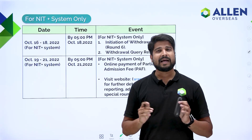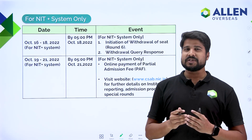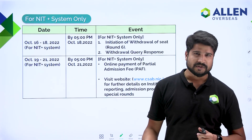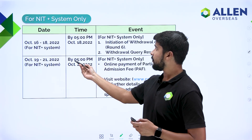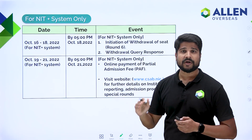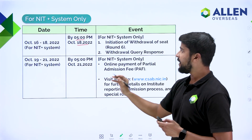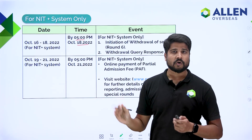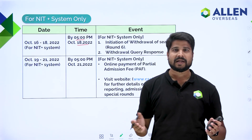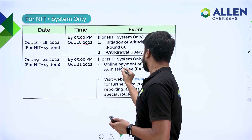After Round 6, there will be a further round for the NIT plus system. NIT plus system refers to those institutes which provide admission purely based on your JEE Main ranks. This round will open on 16th October. If you want to withdraw your seat in the NIT plus system, you can do so by 5 pm on 18th October. From 19th to 21st October are the dates to pay the PAF — Partial Admission Fee — to accept your seat in the NIT plus system.